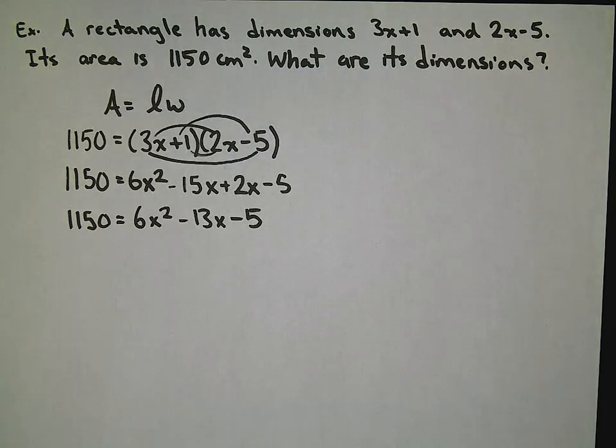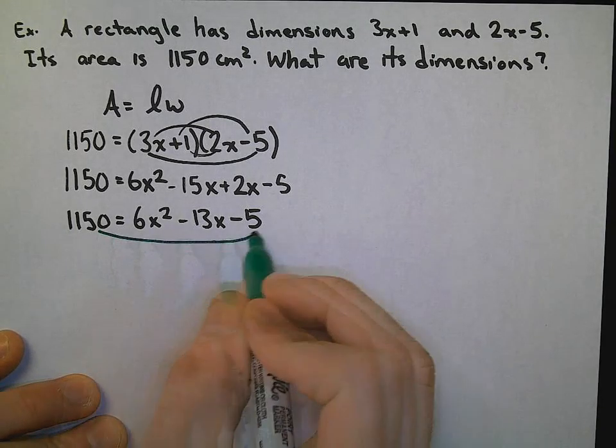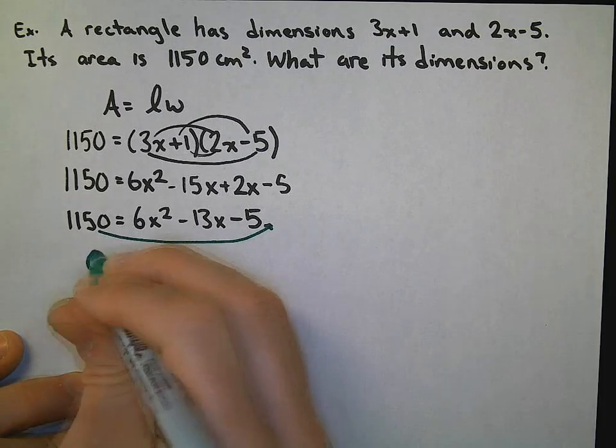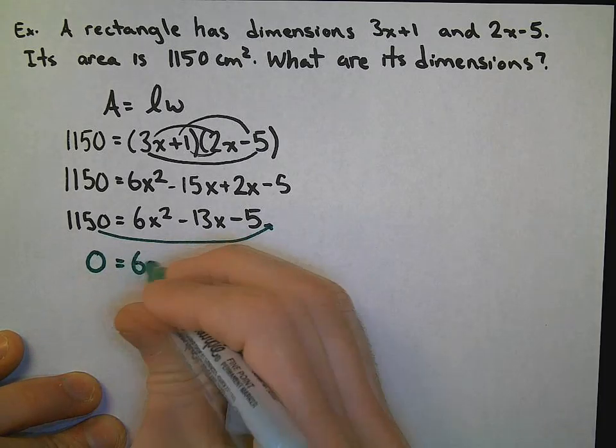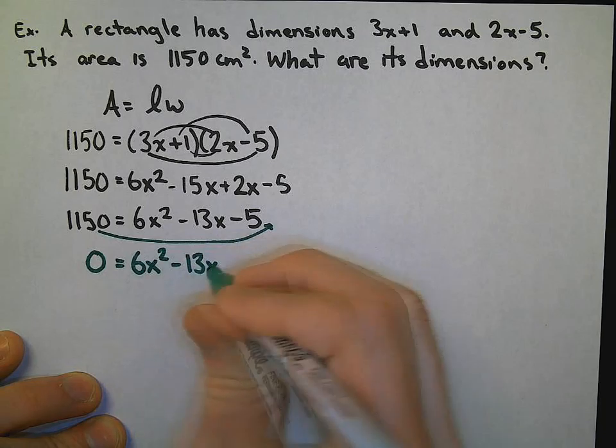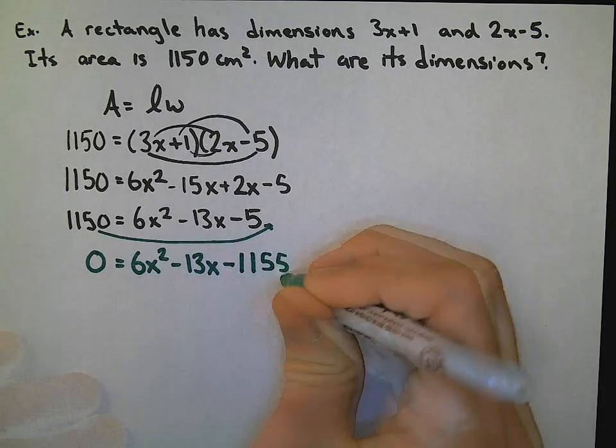That's still not a quadratic equation. Let's bring 1,150 over to the other side. That leaves 0 on the left-hand side. And we are left with 0 = 6x² - 13x - 1,155.